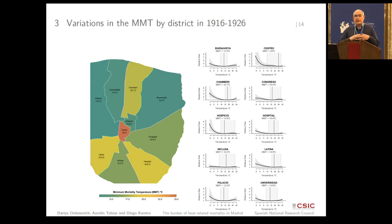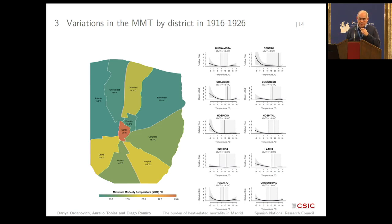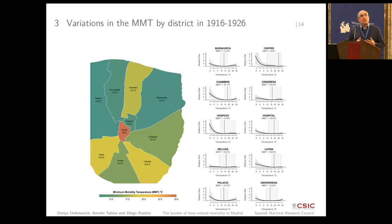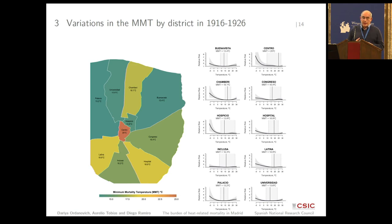We have all the deaths in Madrid geo-coded. So we thought: why not see the effect of cold and hot weather by neighborhood in Madrid? Madrid is divided into ten districts. The idea was to see if those districts less prepared and less developed — with no water supply network or no sewage system — were worse adapted to these kinds of extreme effects.